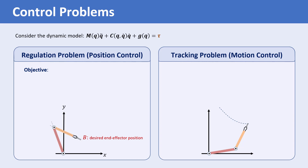Using the inverse kinematics, we can find the joint coordinates that correspond to the desired end effector position. We denote the vector of the desired joint coordinates by Q sub D, which in this example is a two-dimensional vector.